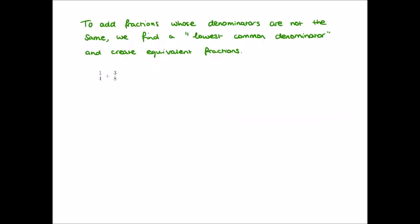To add fractions whose denominators are not the same, we need to find two fractions whose denominators are the same. We find a lowest common denominator by finding the LCM — the lowest common multiple — of four and eight. That's the smallest number appearing in both the four and eight times tables, which is eight. So eight is our lowest common denominator.